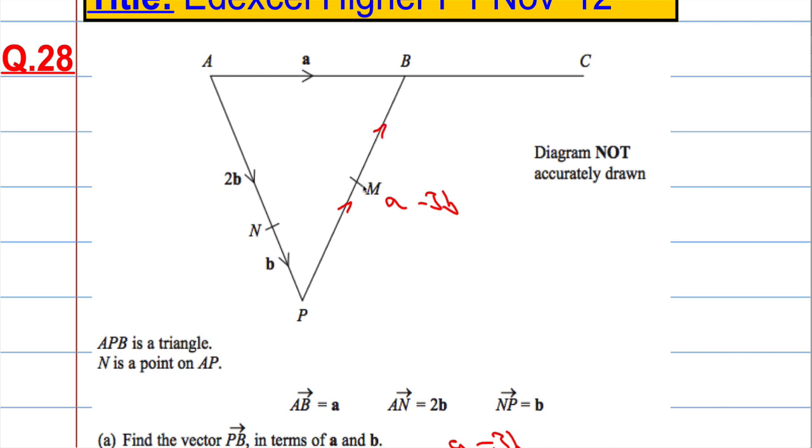If M is the midpoint, that means that that was a shocking curly brackets. Let's try that again. There we go, a little bit better. M is the midpoint, so that means that the vector PM is going to equal half a minus 3 over 2b.